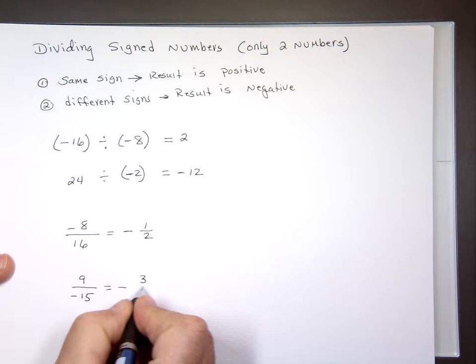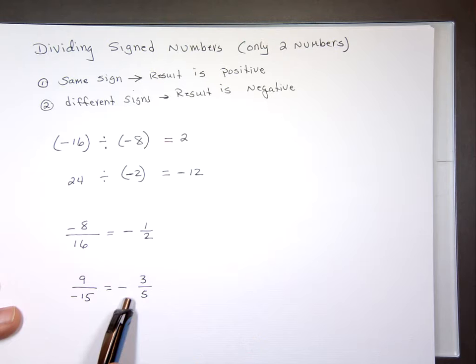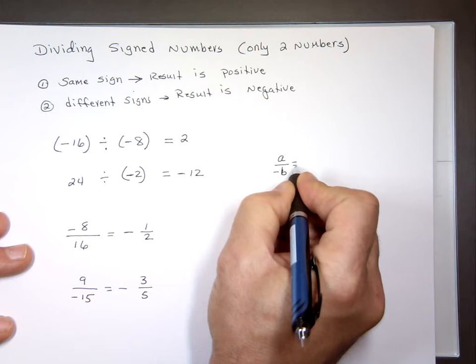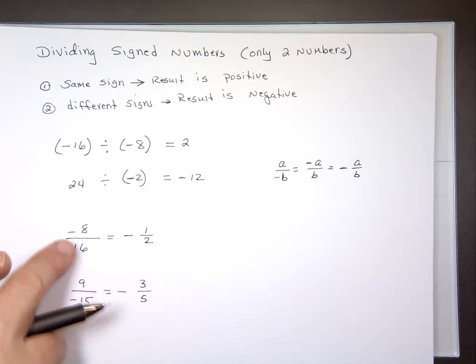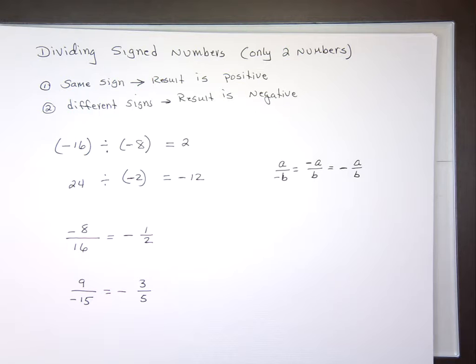Notice: when the negative is in the bottom, the answer is negative; when the negative is on the top, the answer is negative. That's why we have a rule in math that says if you have a over negative b, you can move the minus from the bottom to the top, or move it to the front — because either way, the answer is still negative.